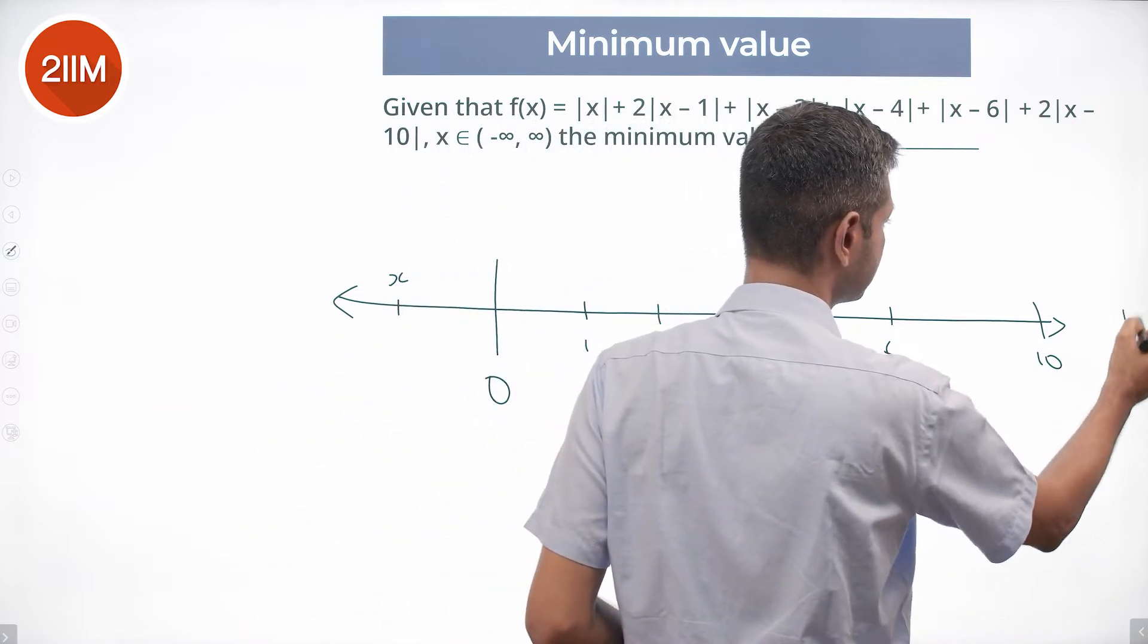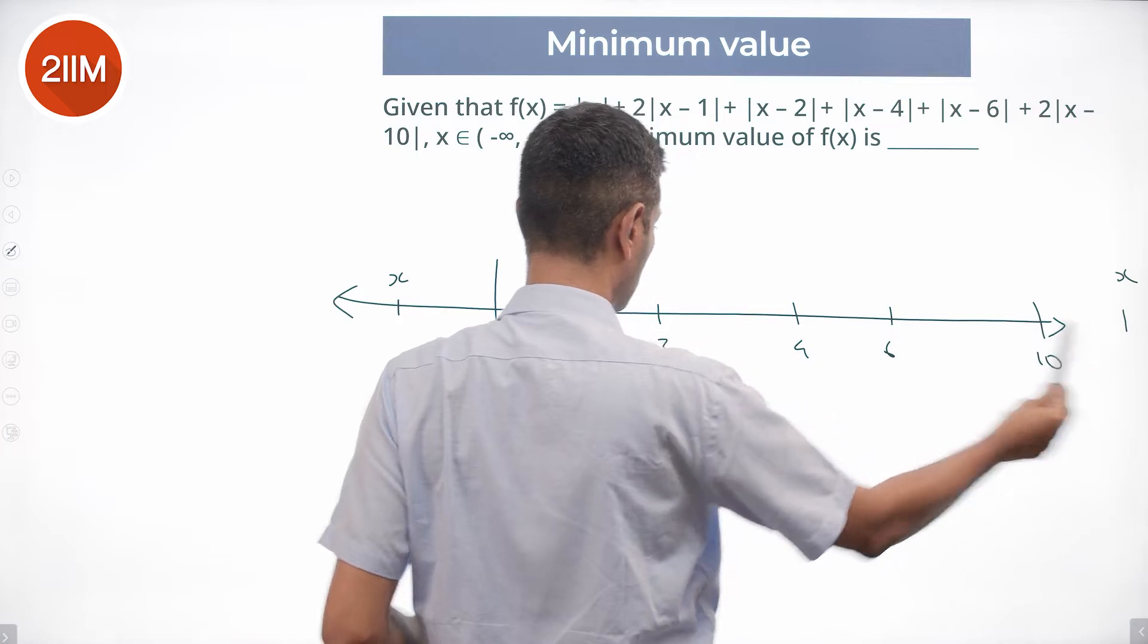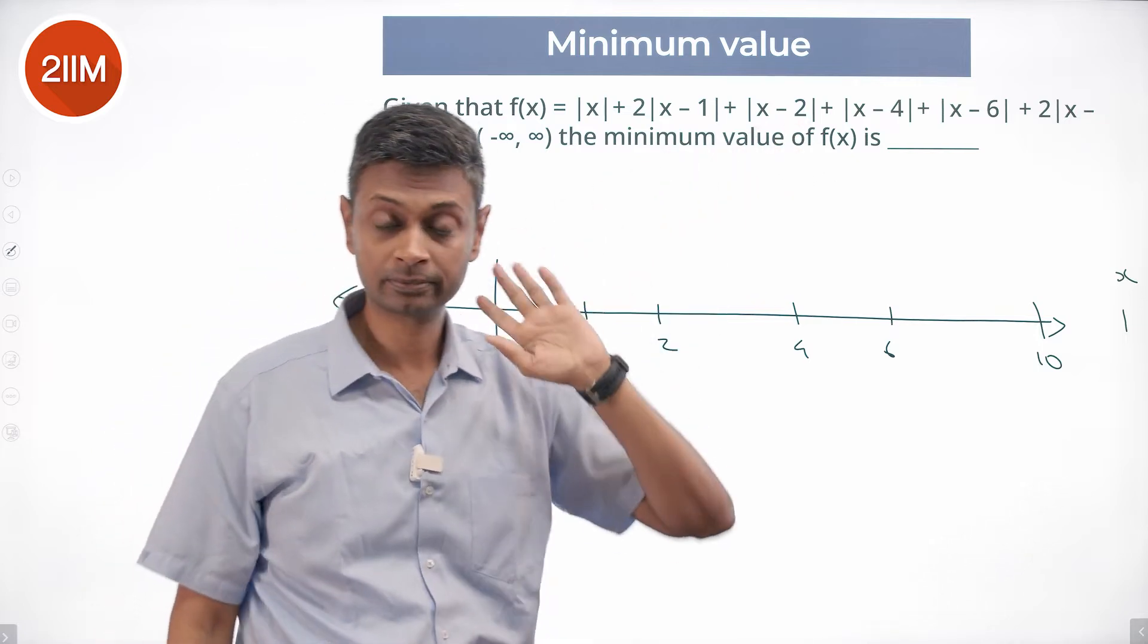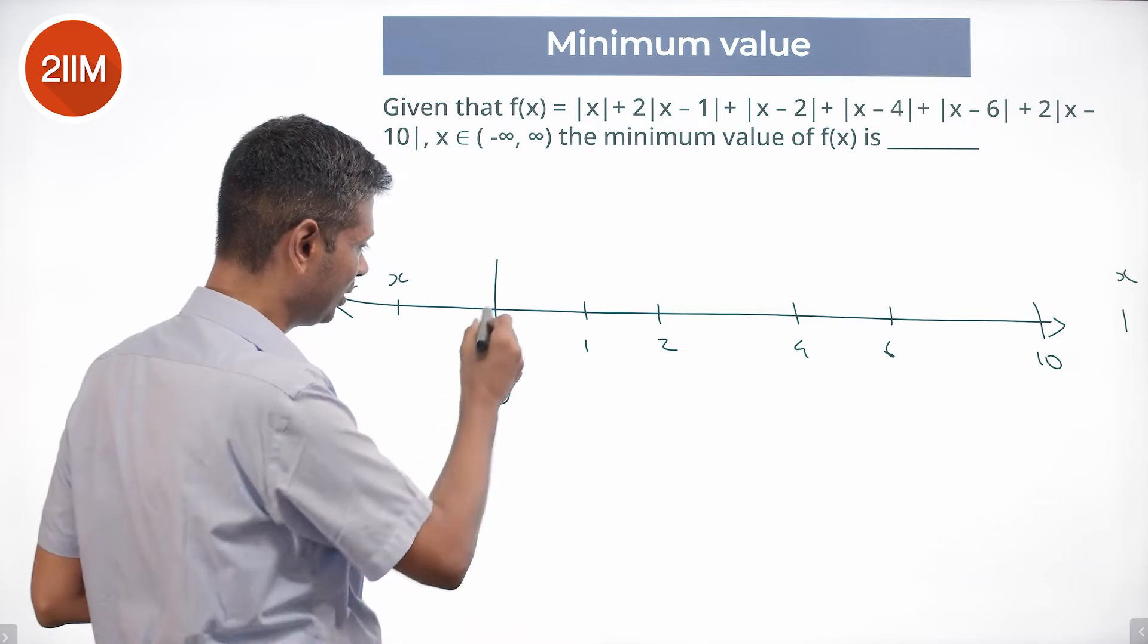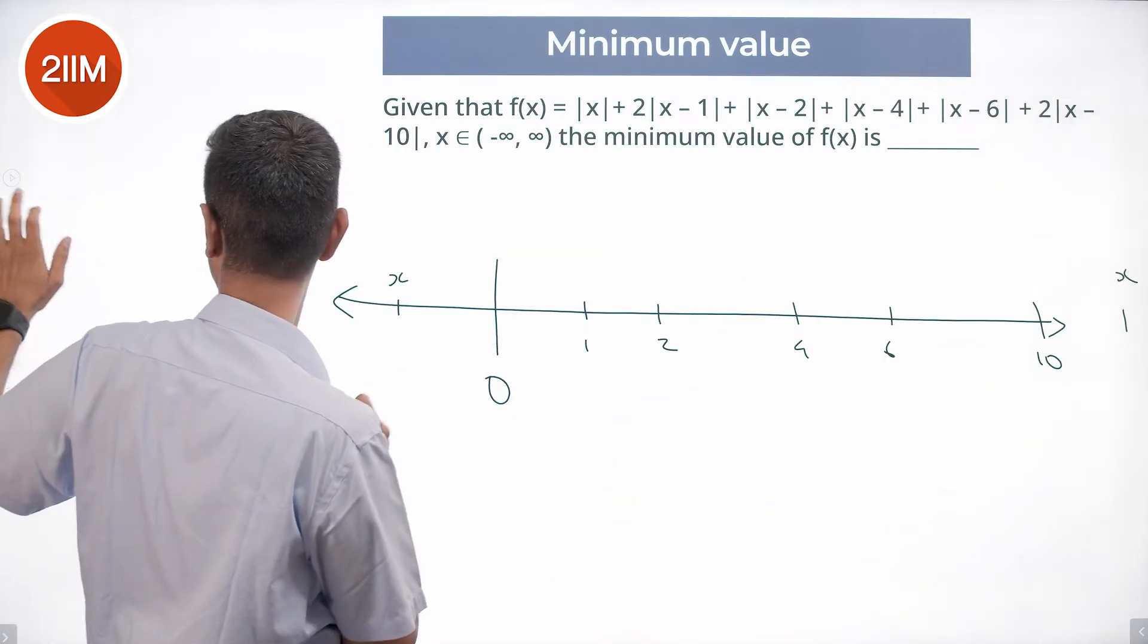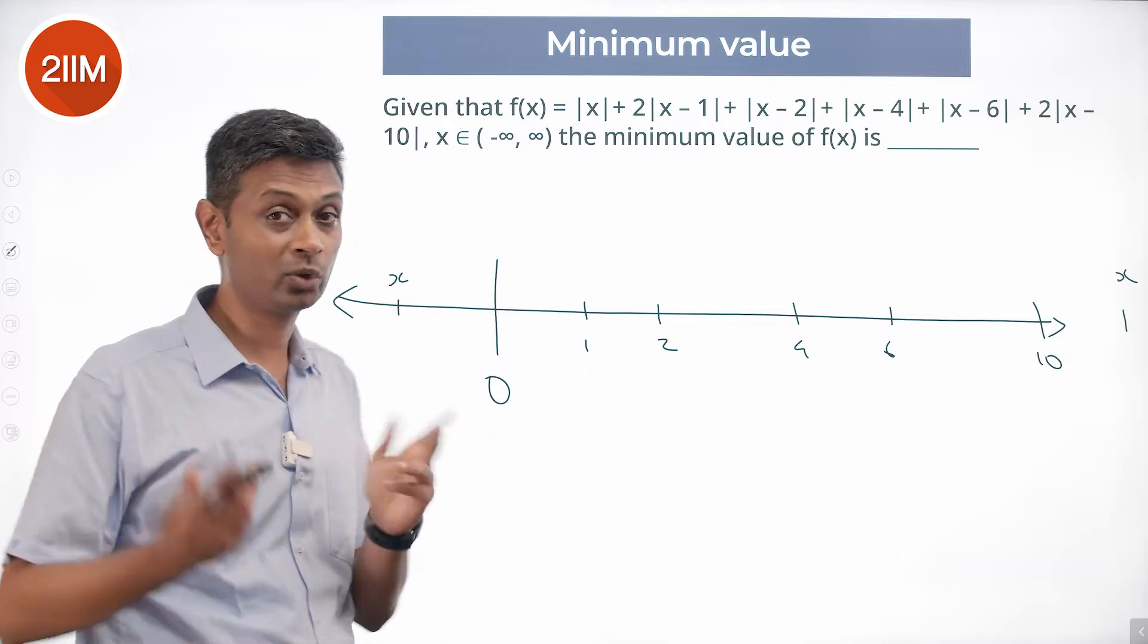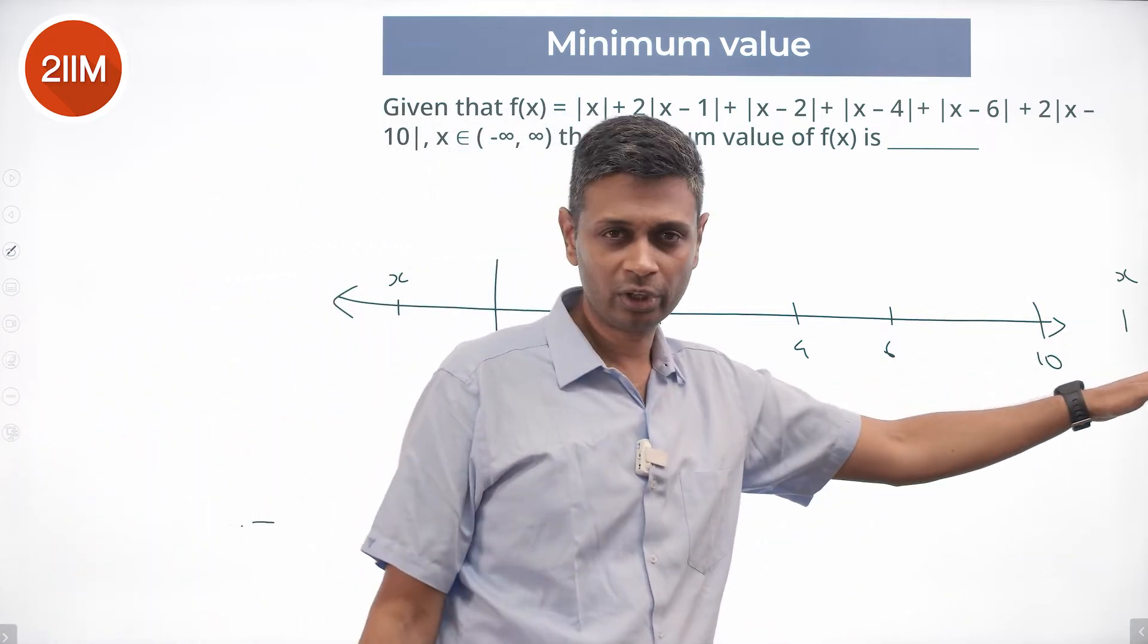So suppose X were here. X minus 10, X minus 6, X minus 4, X minus 2, X minus 1, X minus 0. I'm adding all these distances. These are 2 times. I'm adding all of them. It is better to add from here. I don't have to think about X here. If I put X at 0, that will be better than putting X here. All these distances won't get added. Likewise, beyond 10 I don't need to worry, I'll worry about 10.